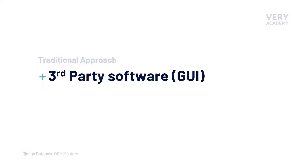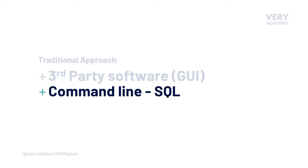There are generally two traditional approaches to inserting or creating tables and fields in a database. First, we may use third-party software to connect to our relational database management system and use its interface to create tables and fields. Alternatively, we can use the terminal or command line to send SQL commands to build and manage our database. The Django ORM provides a no-SQL approach, though behind the scenes it converts our Python code into SQL.